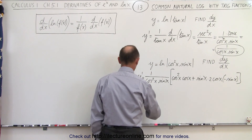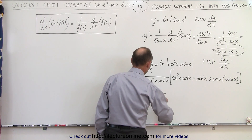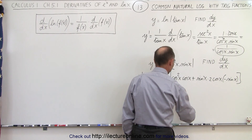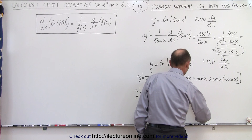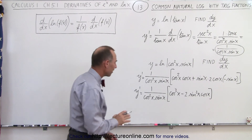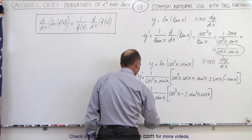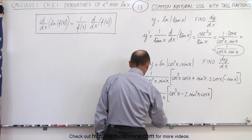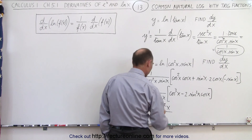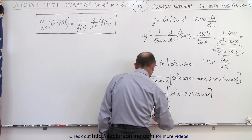Now we need to simplify. So y prime is equal to 1 over cosine squared of x times sine of x, times what's inside the brackets — that would be cosine cubed of x minus 2 times sine squared of x times cosine of x. We can factor out a cosine of x and cancel one of those, so y prime equals, in the numerator, cosine squared of x minus sine squared of x, and in the denominator, cosine of x times sine of x.